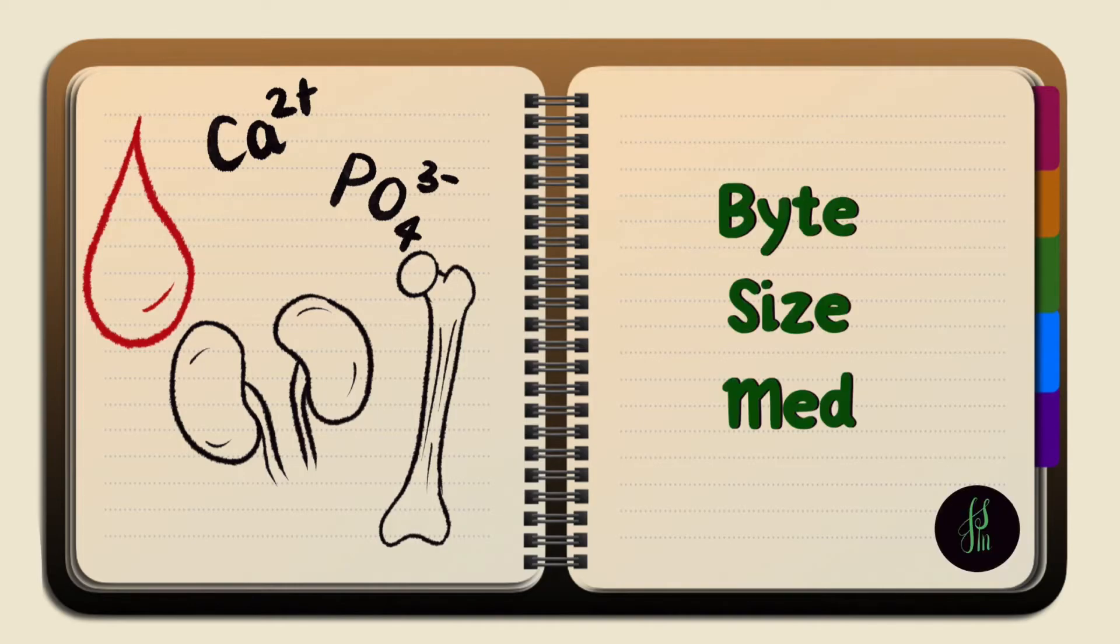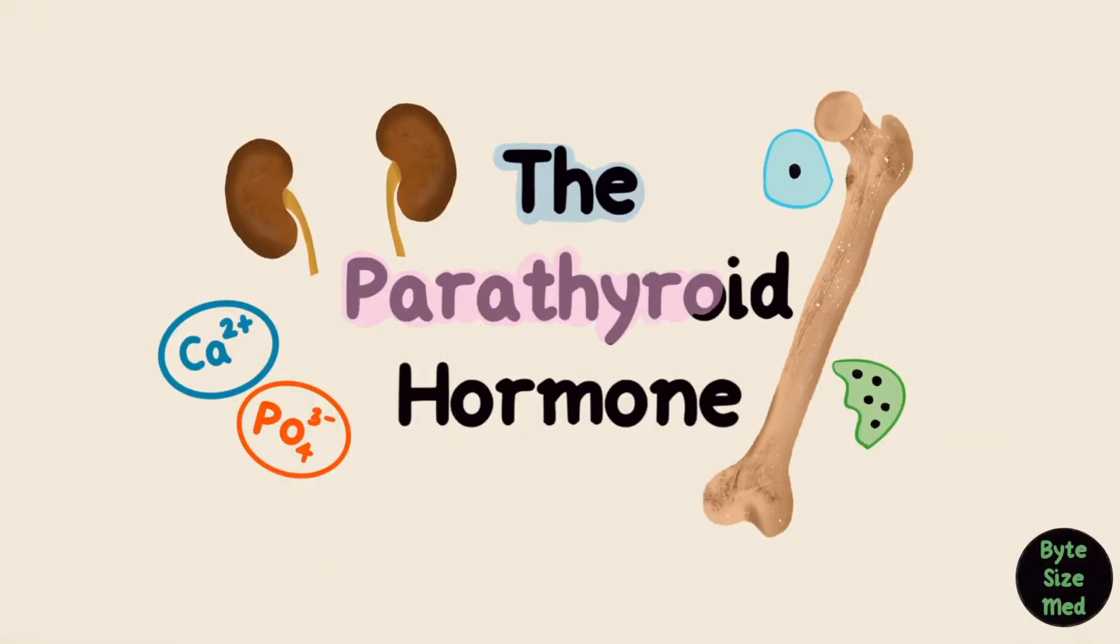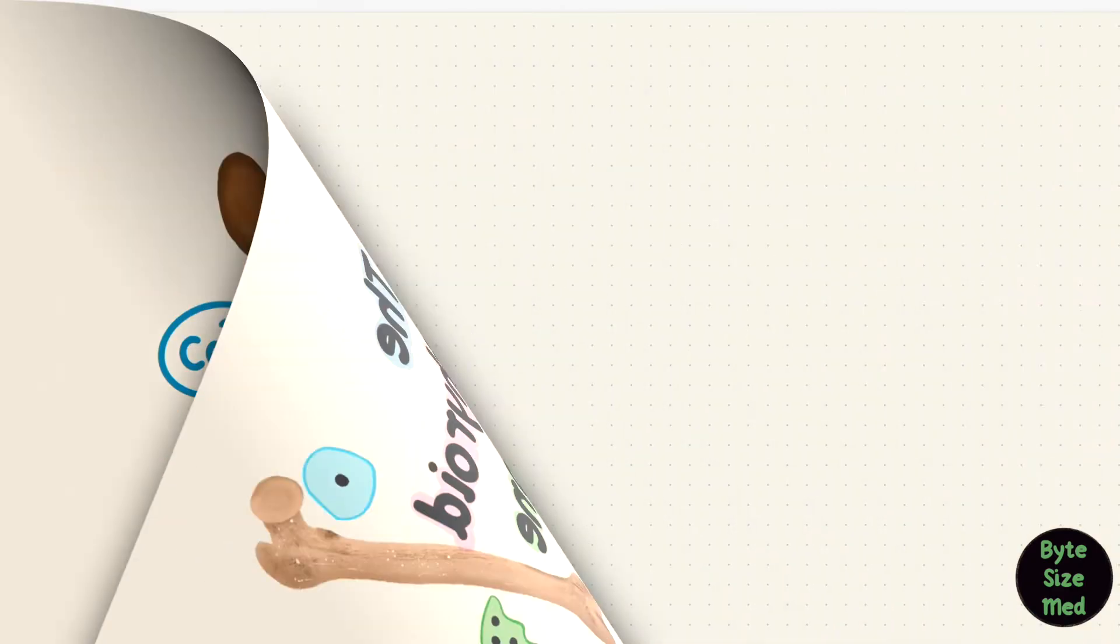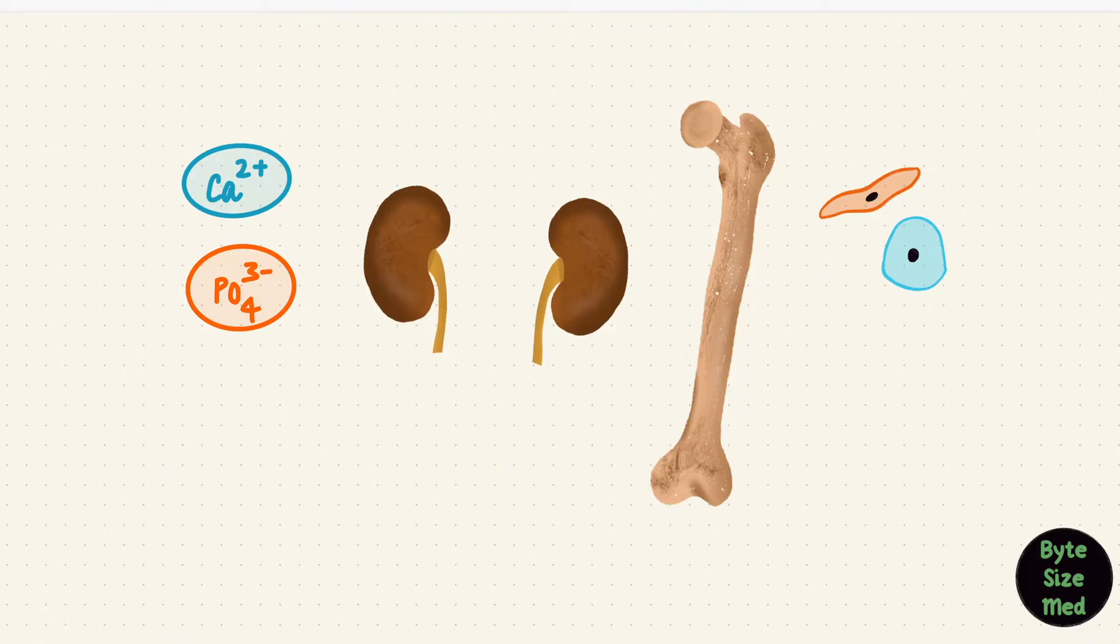Hello, welcome to Bite Size Med. This video is on the parathyroid hormone. A few things that are good to know before learning about this hormone is how calcium and phosphate are distributed in the body, how the kidney handles them, and how bone cells work. I will leave links to videos on this stuff in the description box below. But now we're going to look at the parathyroid hormone.